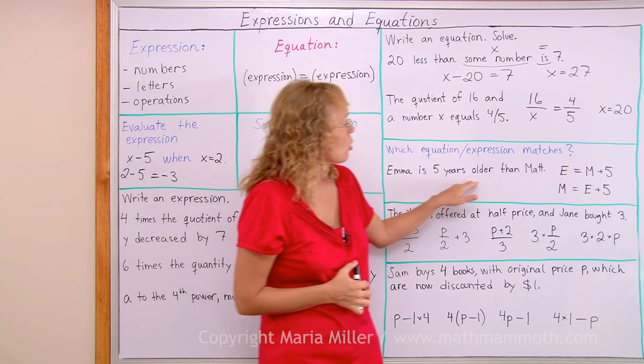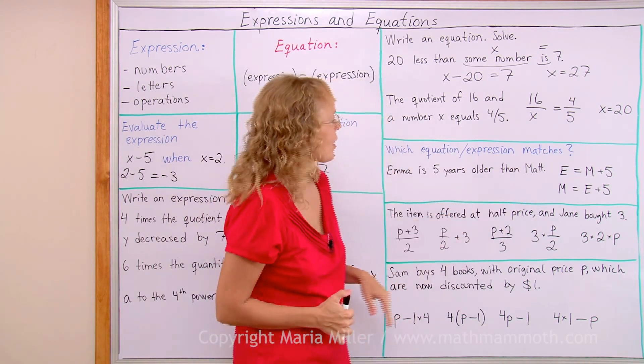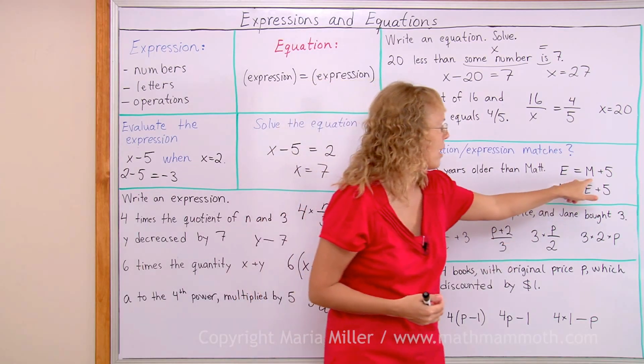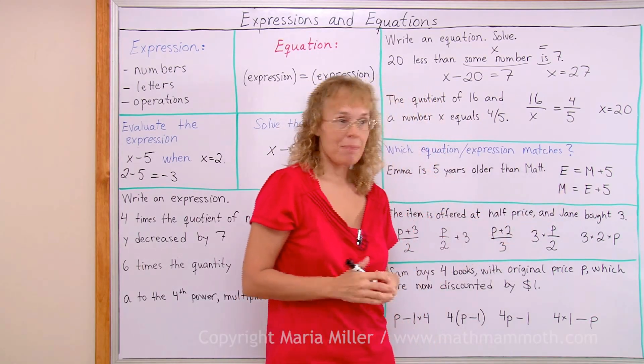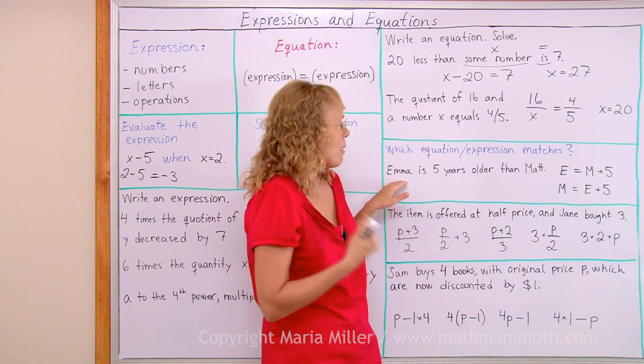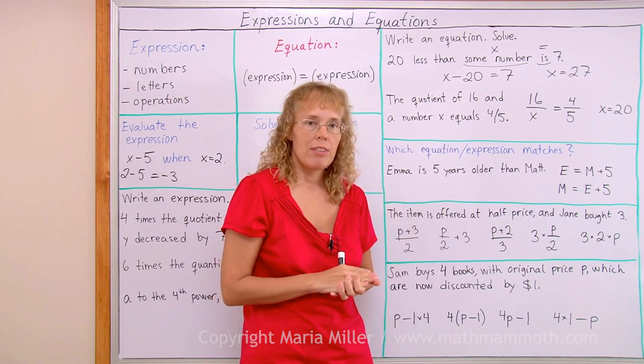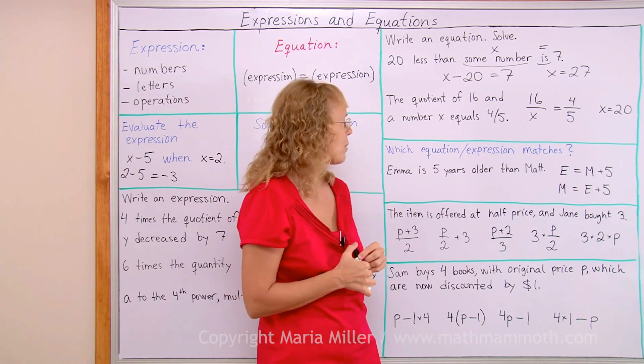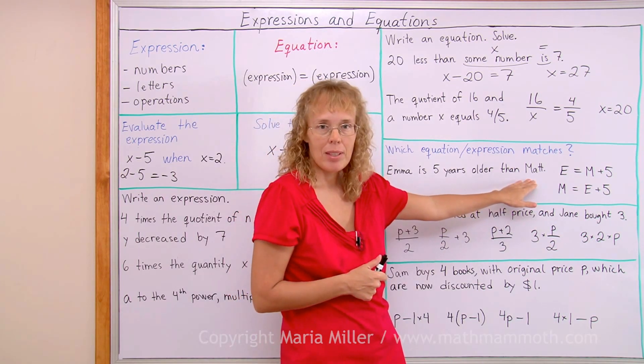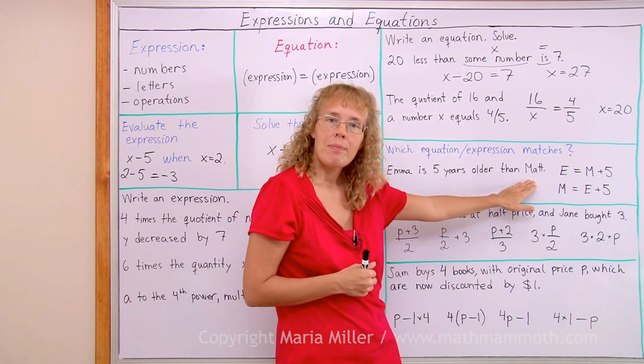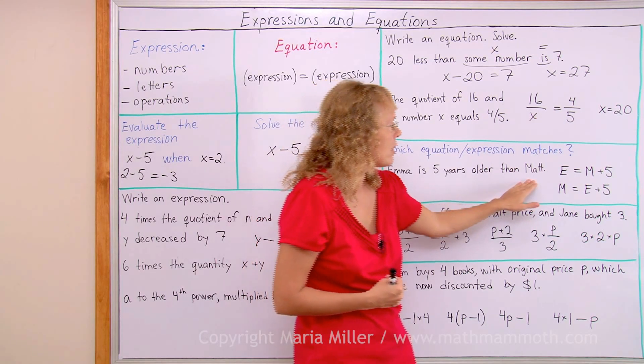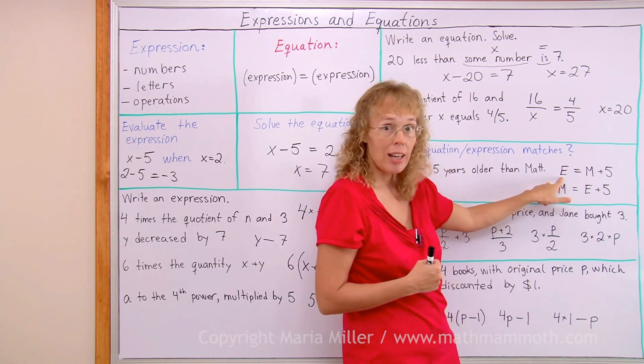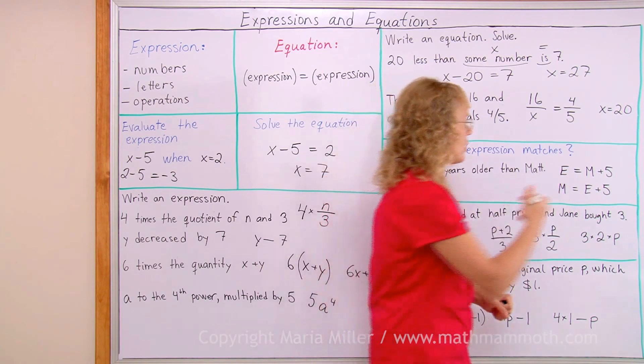Emma is five years older than Matt. Okay, Emma's age if it is E and then Matt's age is M. Which one of these matches? Emma is the one that is older, five years older. So you can again maybe use specific numbers to help you. Let's say that Matt is 20. How old is Emma? She's 25. So if Matt is 20, you put 20 here and 25 then this one is the one that matches, okay?